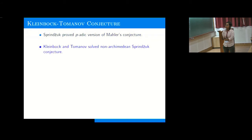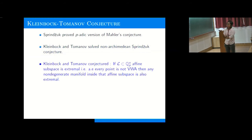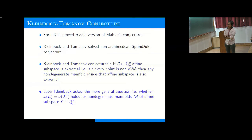Kleinbock and Tomanov also proved that the set of very well approximable numbers is contained inside a dynamical set in the p-adic setup. They conjectured that, analogously to the real case, if you take an affine subspace of Q_p^n which is extremal — meaning almost every point is not very well approximable — then any non-degenerate manifold inside that affine subspace will behave similarly. Kleinbock also asked the more general question: whether omega(L) = omega(M) holds for p-adic manifolds as it does in the real case.